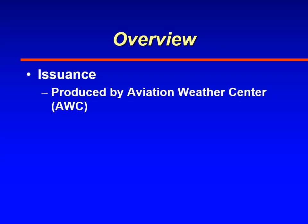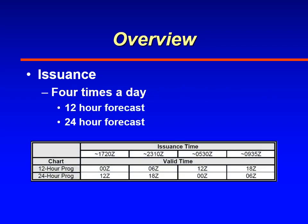The chart comes out from the Aviation Weather Center, located in Kansas City, Missouri. The Low-Level Significant Weather Prognostic Chart comes out four times a day, and there are two panels: a 12-hour forecast and a 24-hour forecast. The charts come out at 1720, 2310, 0530, and 0935 Zulu.